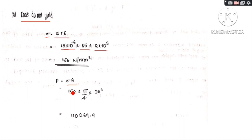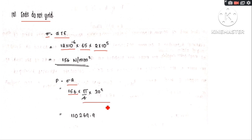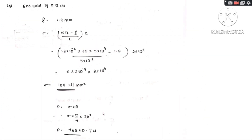Load P equals stress multiplied by area. Area is given by pi by 4 times d squared. Calculating the area with diameter 3 cm and multiplying gives the load value of approximately 110269.9 N. For the end yield case, delta equals 1.2 mm. The stress equation is: sigma equals alpha times T times L minus delta, divided by L, multiplied by E. Substituting all values gives stress equal to 108 N per mm squared.